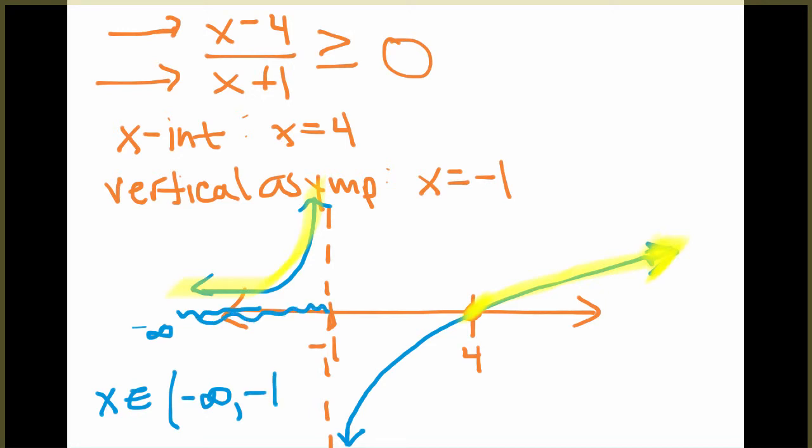But it doesn't include negative 1 because it's an asymptote. So we use a parenthesis there.